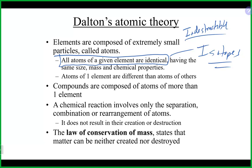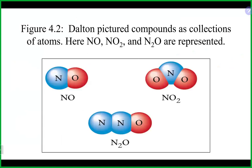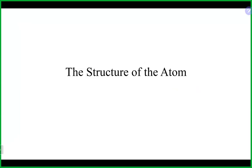Dalton also visualized how compounds form. Different combinations of the same elements can give very different properties. For example, compounds made only of nitrogen and oxygen can have very different properties depending on the number of each atom and how they are bonded — their geometry plays a role.